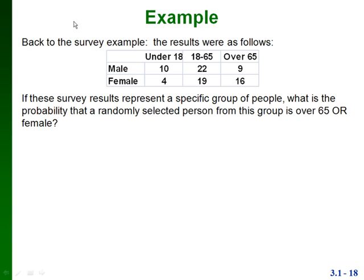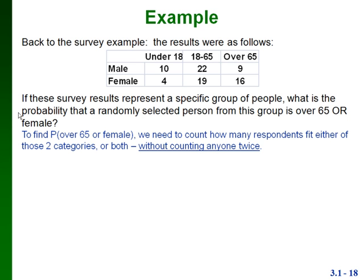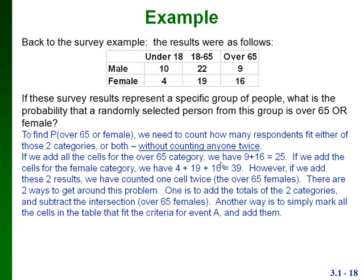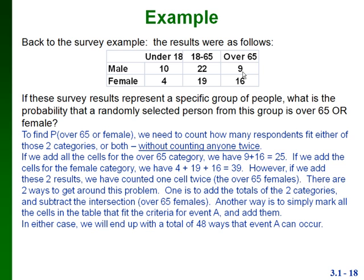Back to our survey example. Here are the results from the survey. We want to find the probability that a randomly selected person from this group is over 65 or female — that's the probability of the union of those two sets. If we add all the cells for the over 65 category — 9 and 16 — we get 25. If we add the cells for the female category — 4, 19, and 16 — we get 39. If we add 25 and 39, we've counted the cell that is both female and over 65 twice.